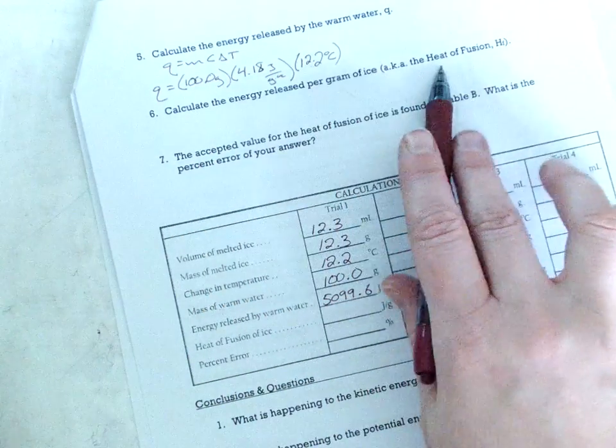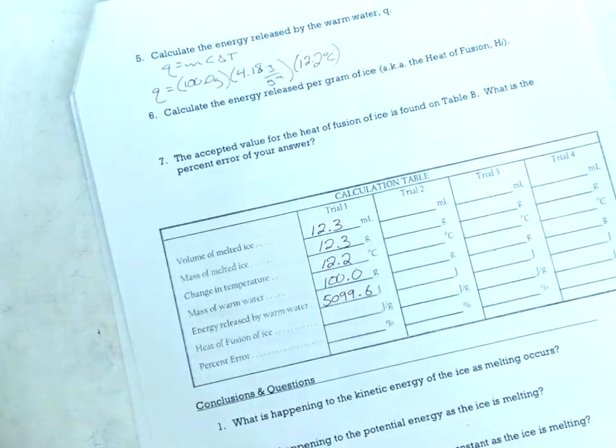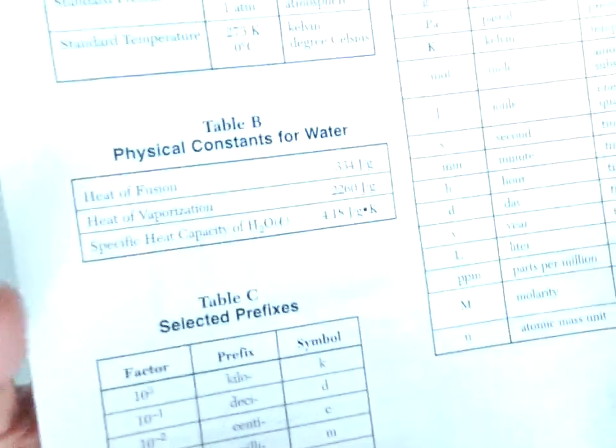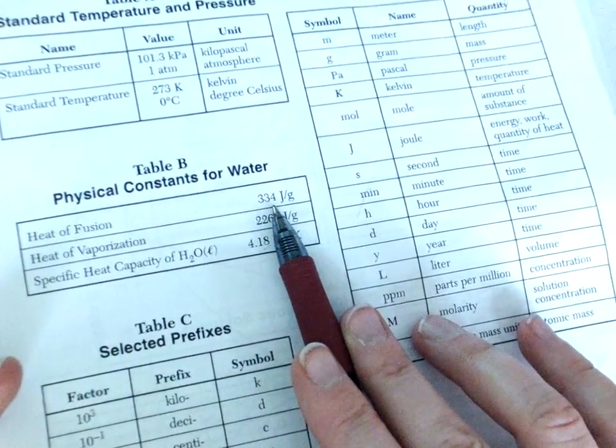But I need to keep three sig figs in mind for the heat of fusion. The heat of fusion is the point of lab so that's one that really needs to be rounded properly and the percent error will be rounded properly. So here we go. Calculate the energy release per gram of ice also known as the heat of fusion. This is the whole point of lab.